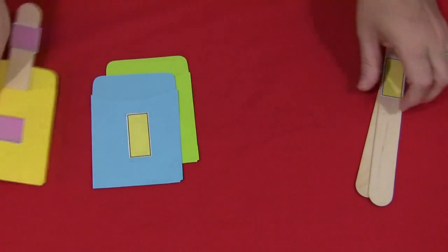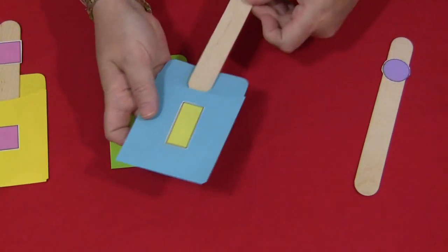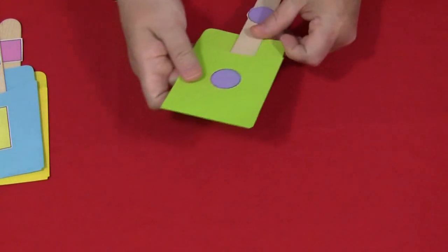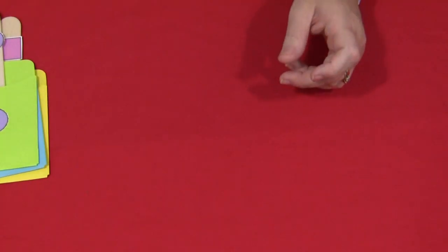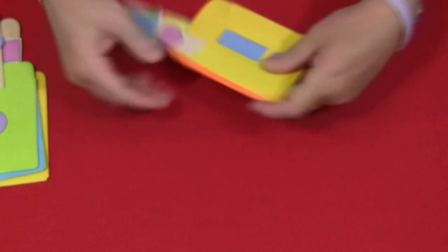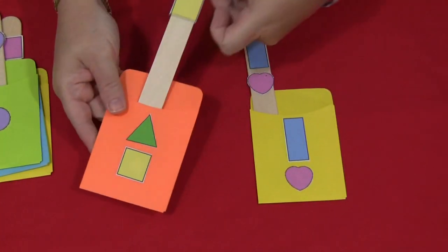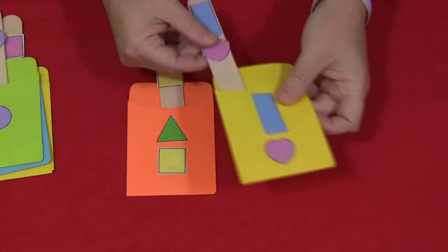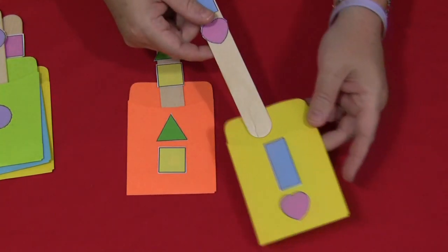You could do single shapes like this or you can do double shapes such as these. You put two shapes on and then two shapes on the packets and then that makes it a little more of a challenge for children to find the match.